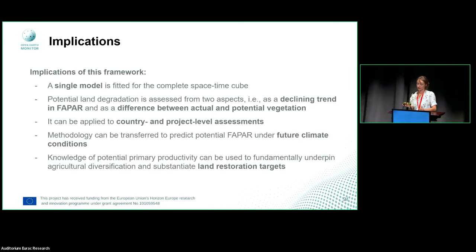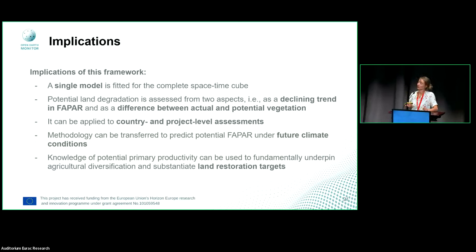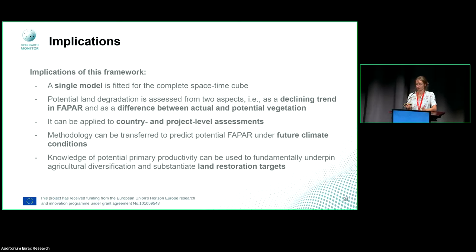The approach uses a single model that is fitted for the entire space-time cube. With this, we can assess potential land degradation from two sides: from a declining trend, but also from a difference between the actual and potential vegetation. It's a framework that can be applied at country and project level, and we could apply this methodology to also predict FAPAR for future climate scenarios, to already take that into account for land restoration today.